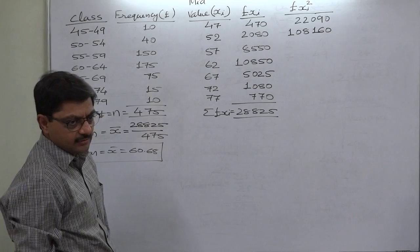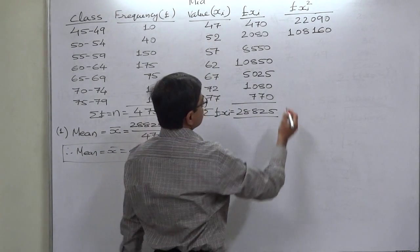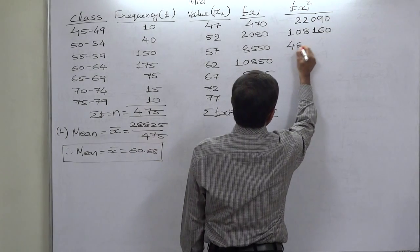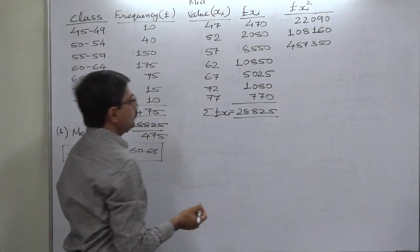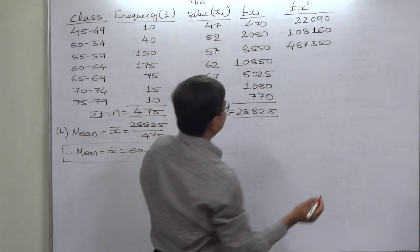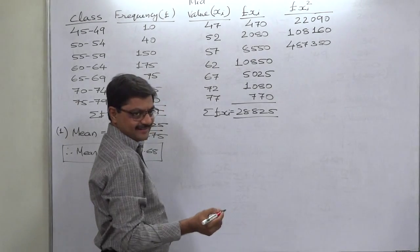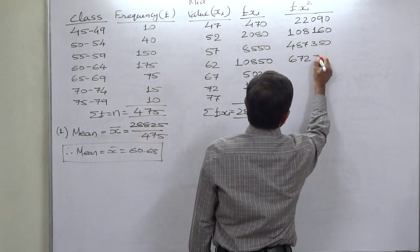57 multiplied by 8550, 487,350. 62 multiplied by 10,850, 672,700.